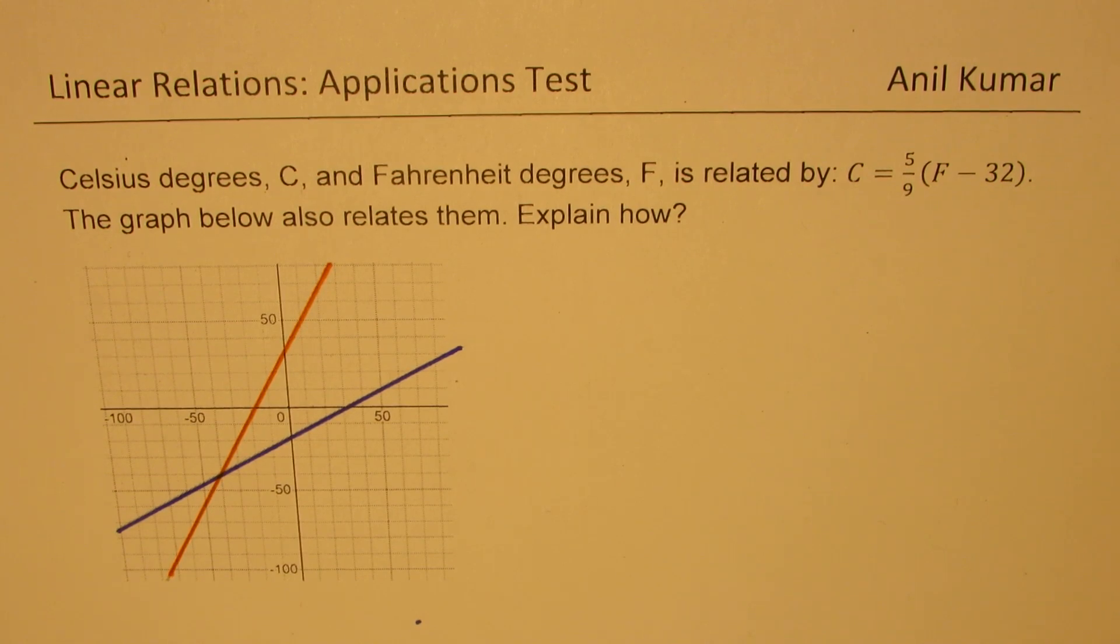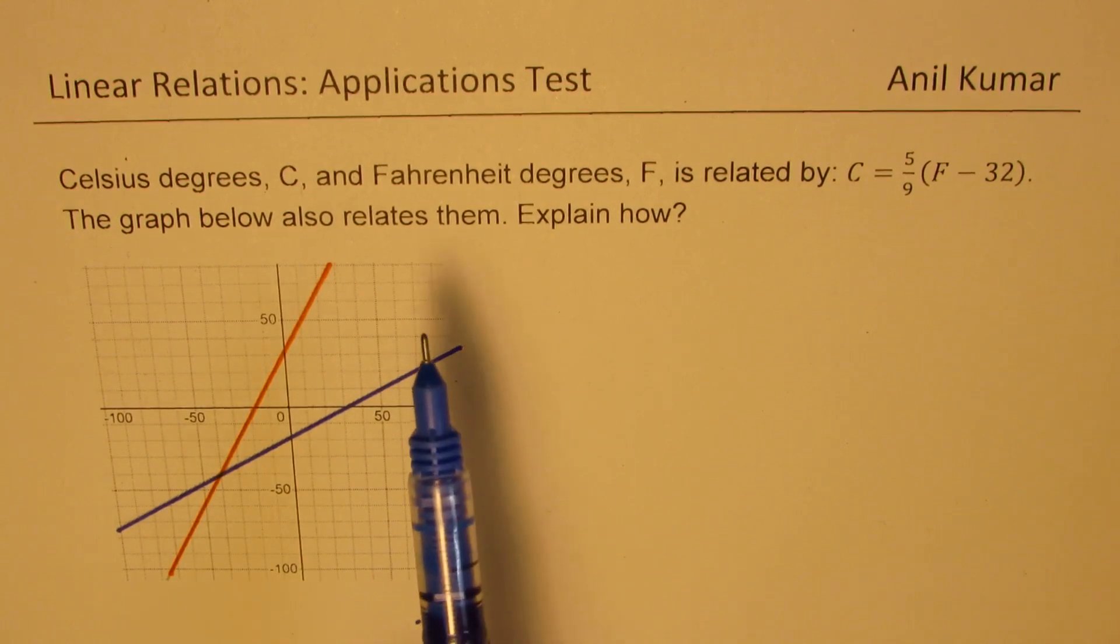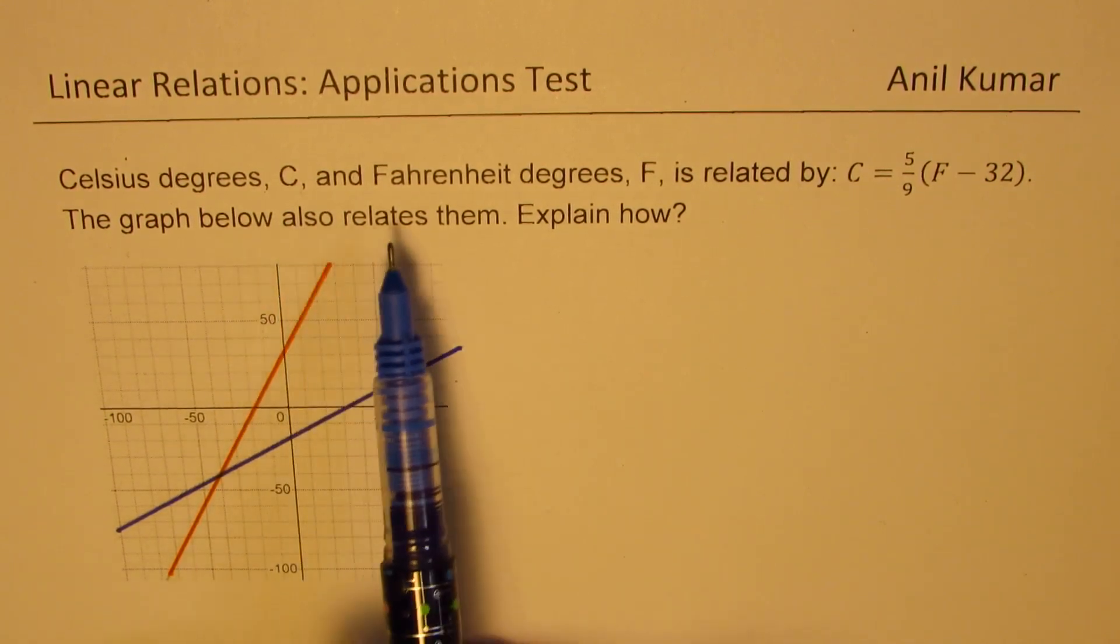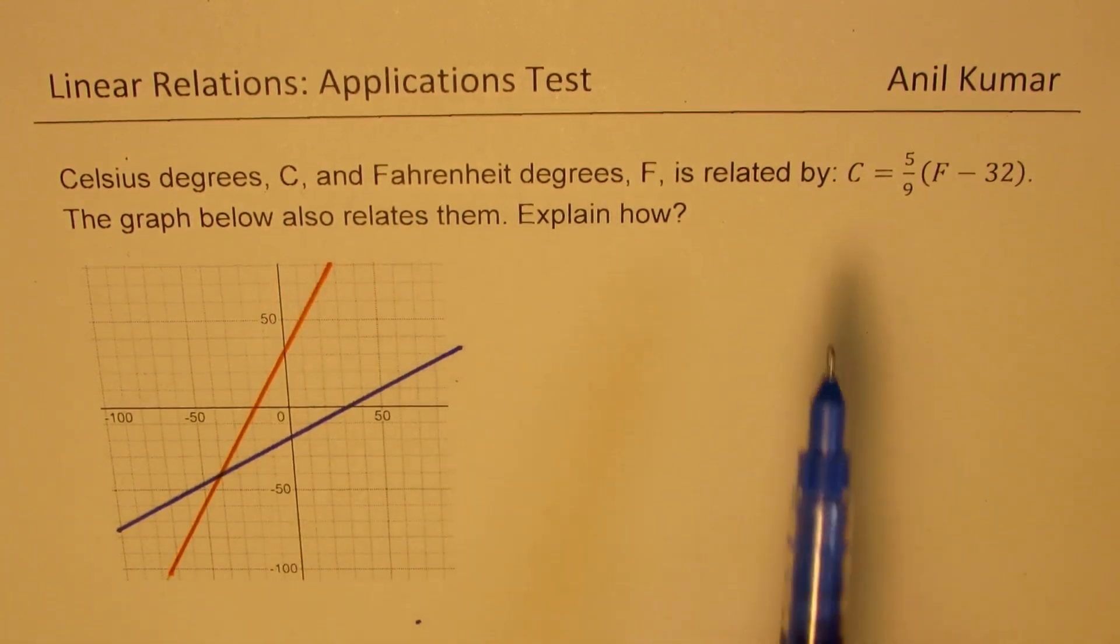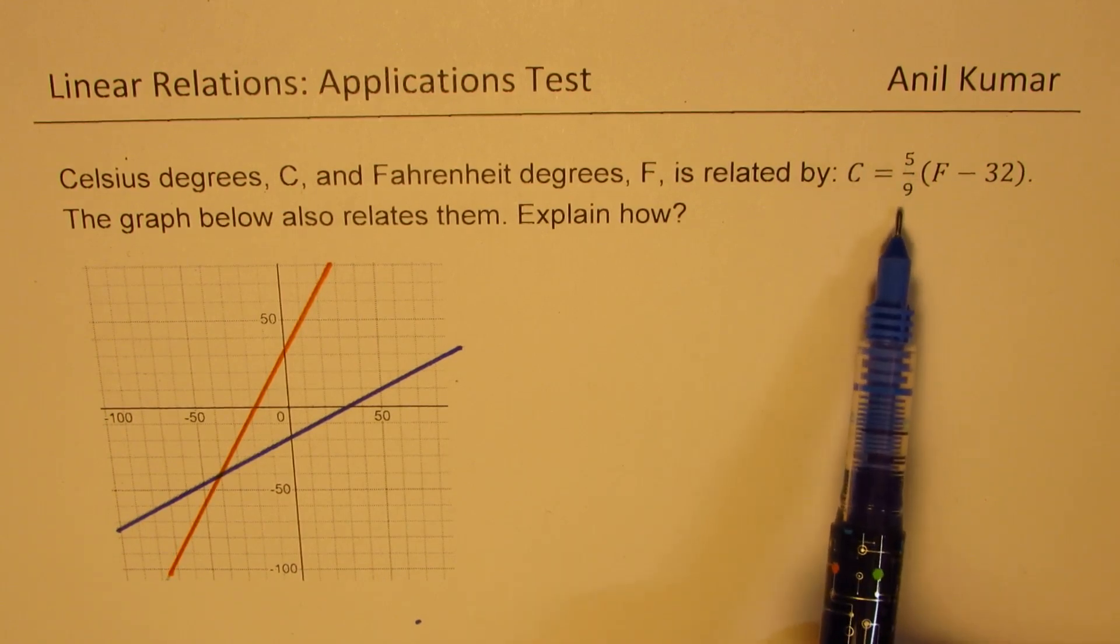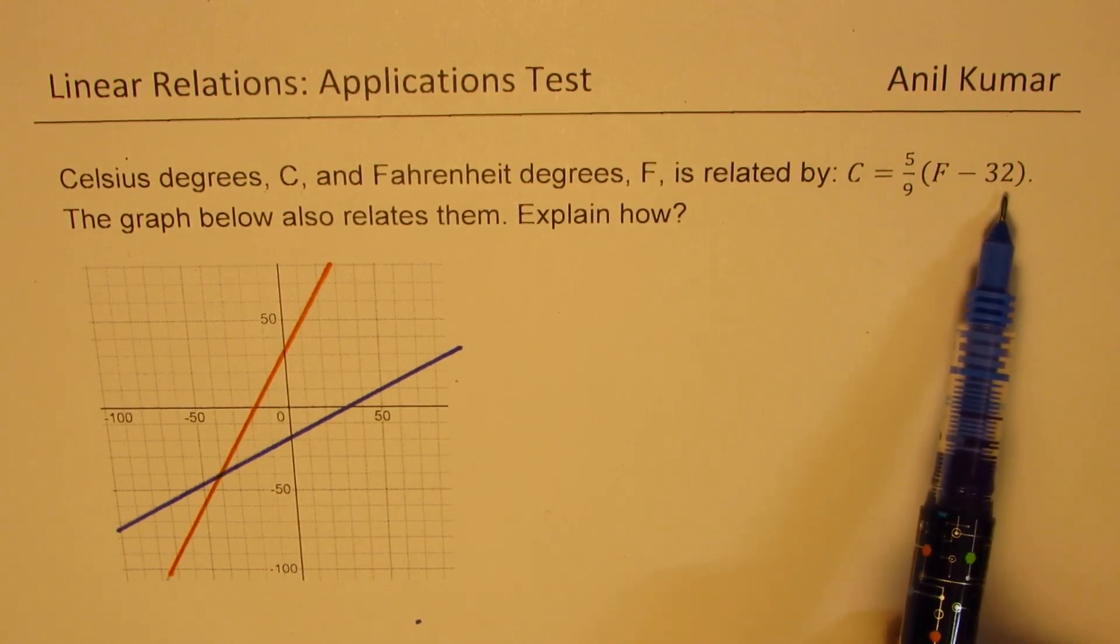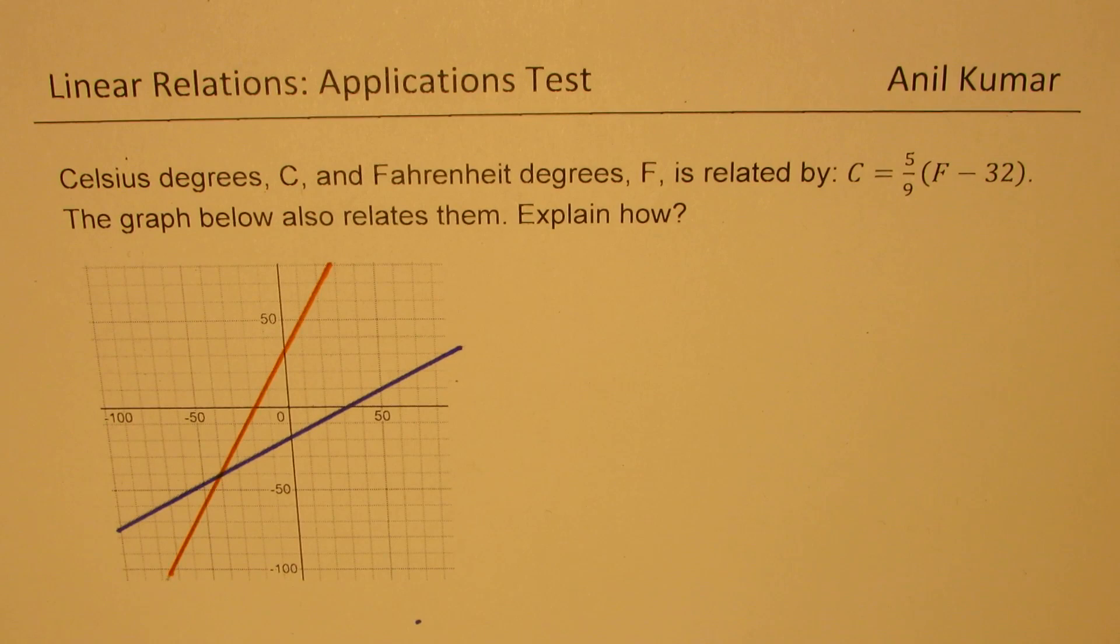I've taken a very important relation, which is relating degree Celsius with degree Fahrenheit. C equals 5 over 9, F minus 32, is a relation between temperatures measured in these two different units. They are so popular, most of the time while we are traveling, we are always converting the temperature from one unit to the other.